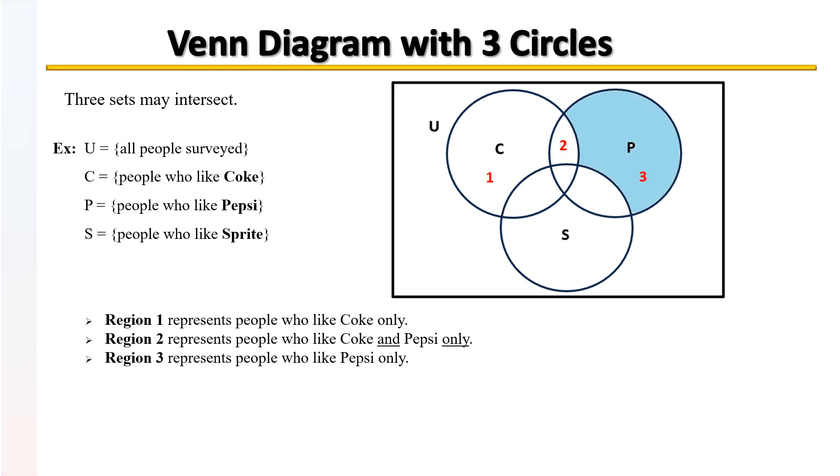Region 3 represents those people who just like Pepsi only. Of those choices, these people like Pepsi only.